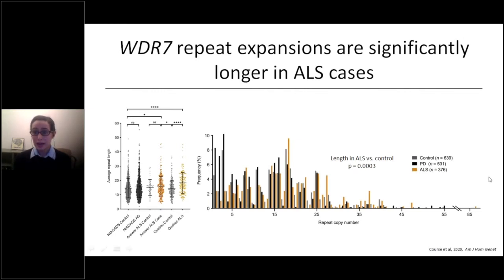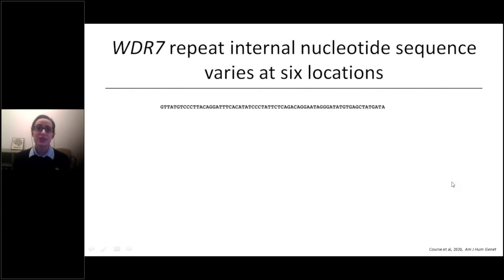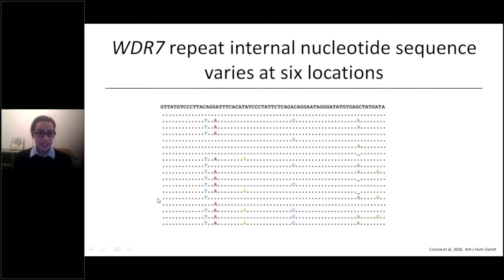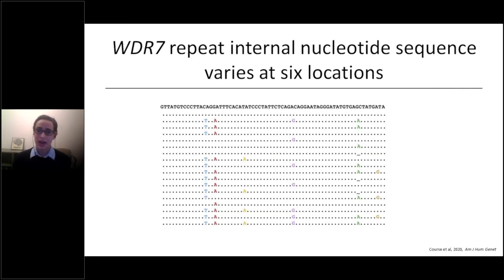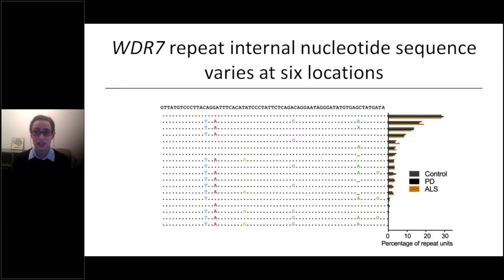We turned to long-read PacBio sequencing of a subset of this Coriell cohort and found variability in the repeat unit. From one example copy of the 69 base pair repeat unit, we found 18 variations that accounted for over 99% of all repeat units observed. The variability occurred at exactly six locations — six base pairs out of 69 are the only ones that change. When we look at the distribution of these repeat units, they are largely the same across disease states, so we don't believe internal nucleotide sequence plays a role in disease susceptibility.